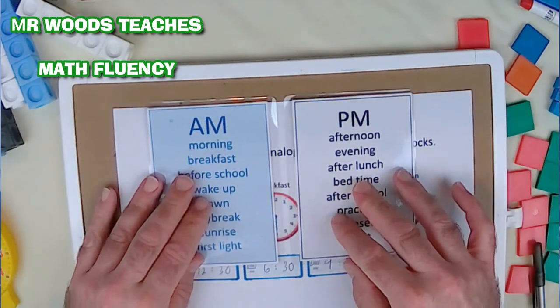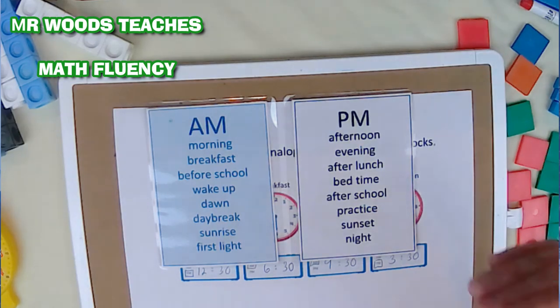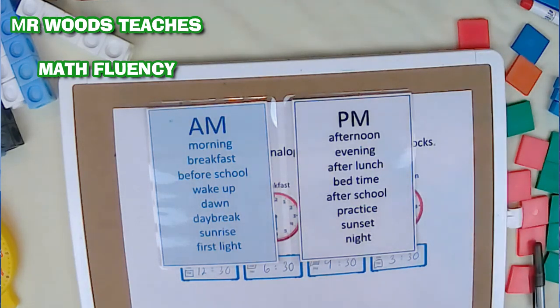And then one last glance at this. I want you to take a look at these words and put them into your memory as morning and afternoon or evening. So AM, morning, breakfast, before school, wake up, dawn, daybreak, sunrise, first light. PM, afternoon, evening, after lunch, bedtime, after school, practice, sunset, night. This is difficult at times, but I want you to try to remember this, practice it, play this video over and over again so you can find those context clues within your word problems.